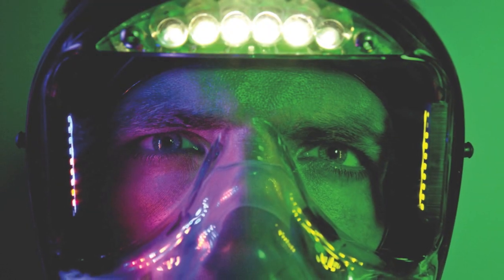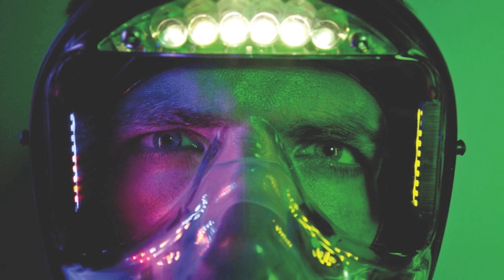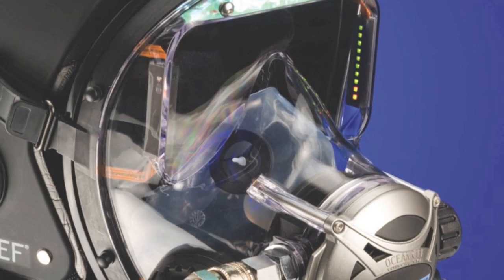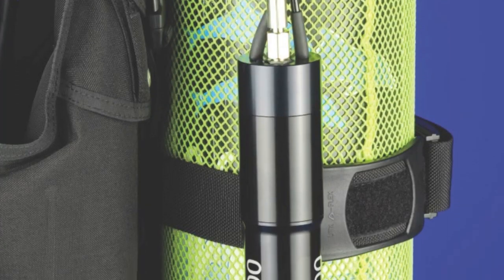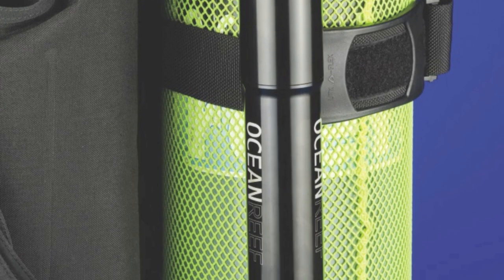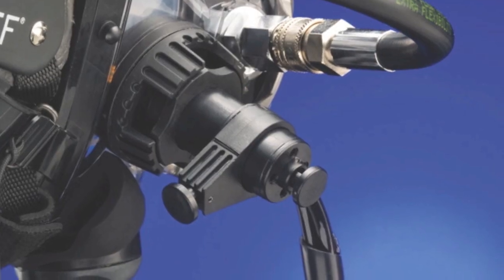The shield display and visor light is a heads-up display and lighting system for the Neptune Space integrated diving mask. It can be purchased pre-installed on any Neptune Space series mask, such as the Predator, Raptor, or Standard Space.